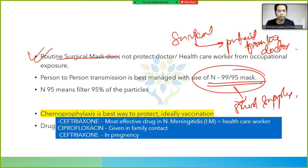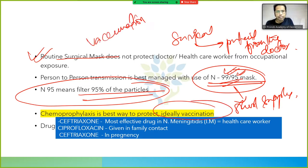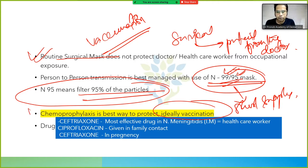N95 means it filters 95% of particles. Ideally, vaccination should be done. If someone is not vaccinated, the next best approach is chemoprophylaxis.